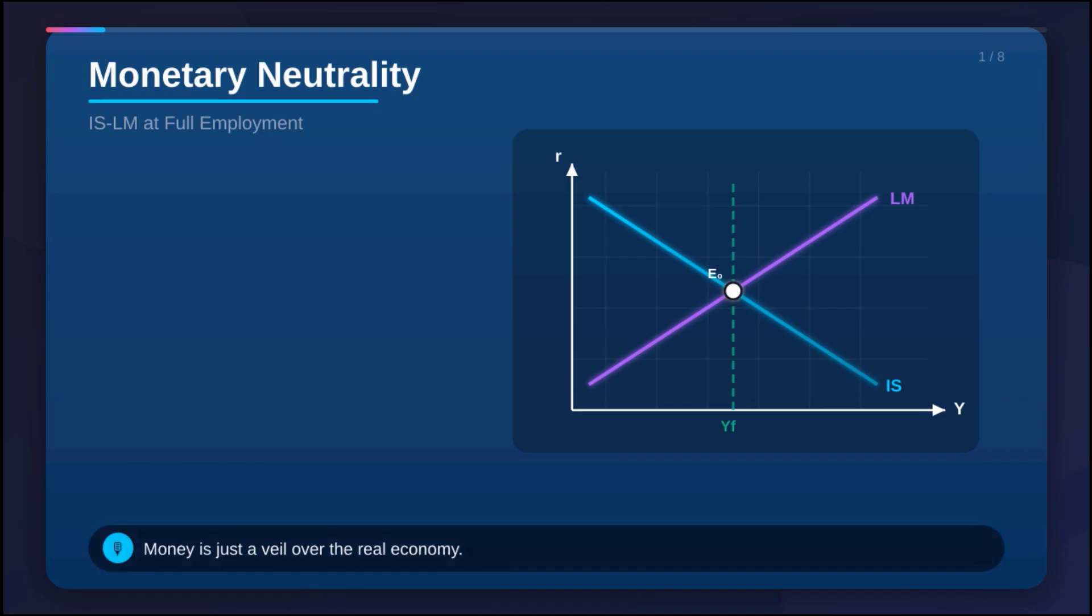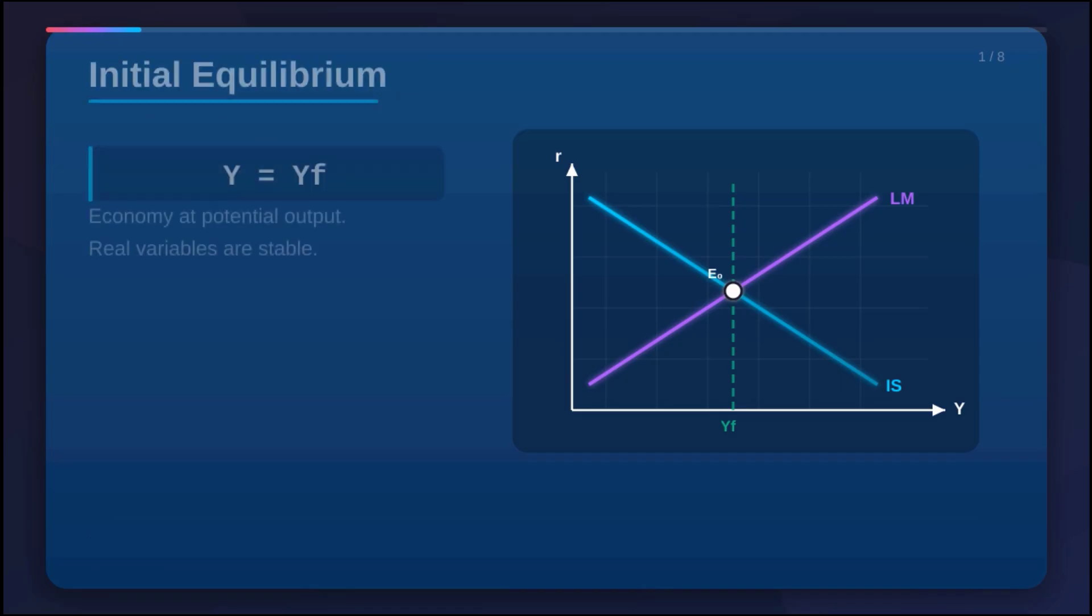So the central bank steps in and essentially just buys them up. It really does sound like the perfect solution, doesn't it? Almost like a cheat code for government spending. But today we're going to unpack why that's not quite right, looking at it through the lens of the neutrality of money.